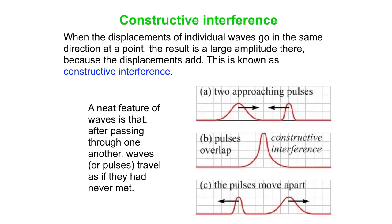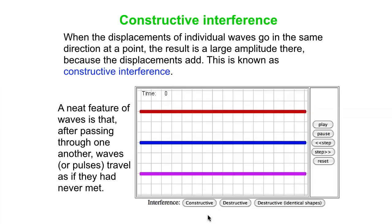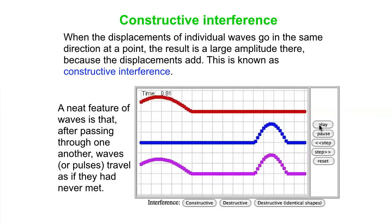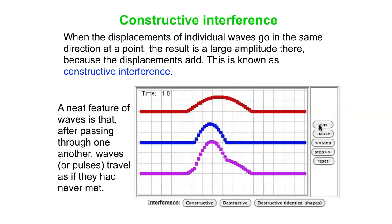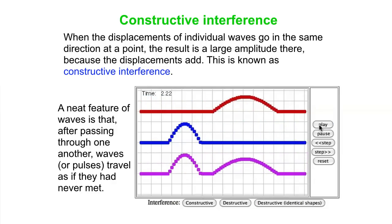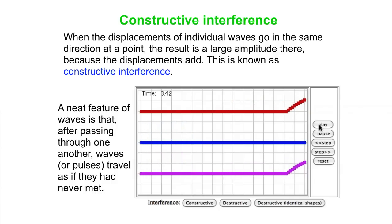It's a neat feature that after passing through one another, the waves travel along as if they had never met at all. We can see this with a video — the magic hand hits the play button, and there it is in action: constructive interference.